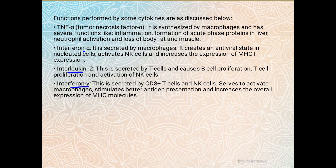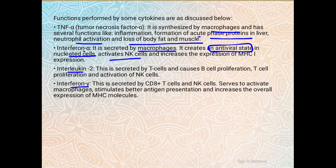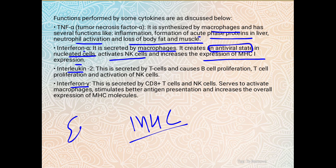Tumor Necrosis Factor works against tumors. It is secreted by macrophages and has several functions including inflammation, formation of acute phase proteins in the liver, neutrophil activation, and loss of fat and muscle. Interferon Alpha is secreted by macrophages and creates an antiviral state, mainly in nucleated cells such as monocytes and dendritic cells. It activates NK cells and MHC class 1 molecules.